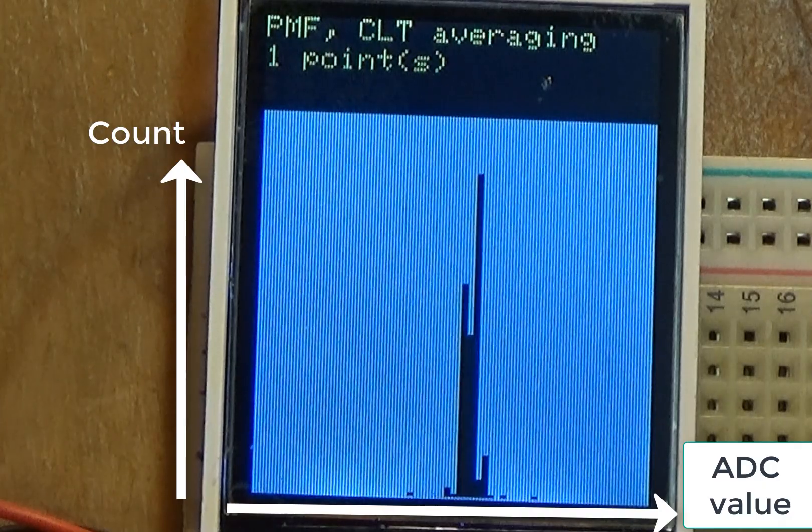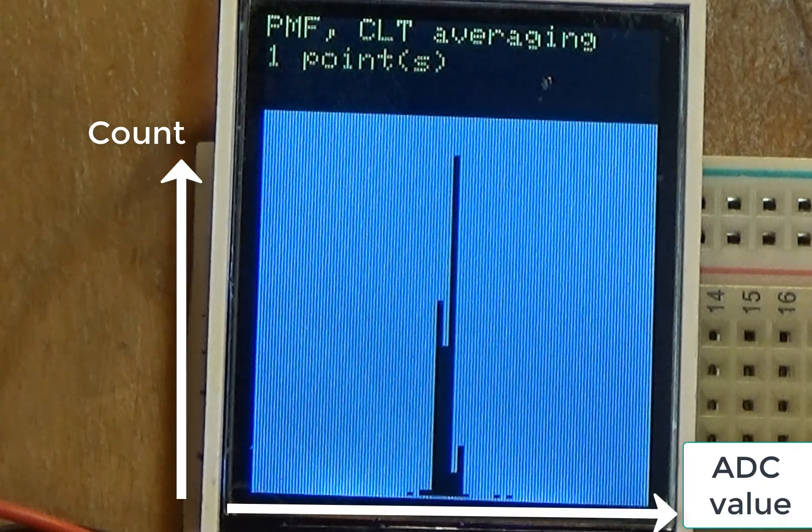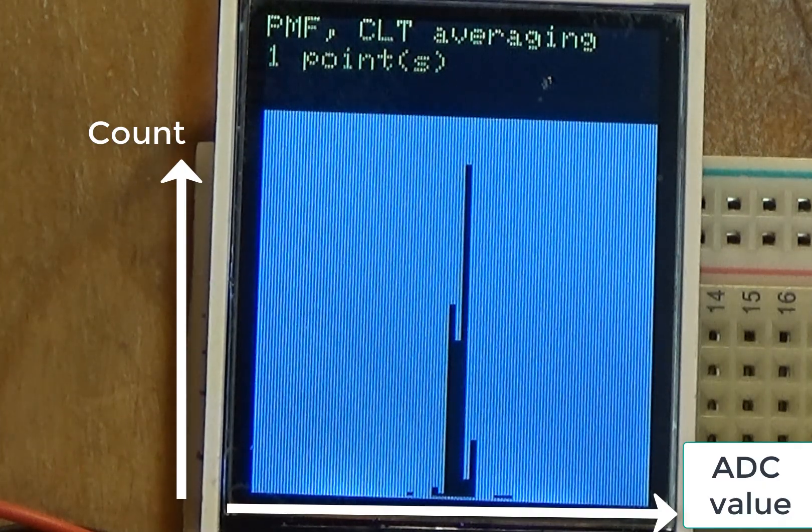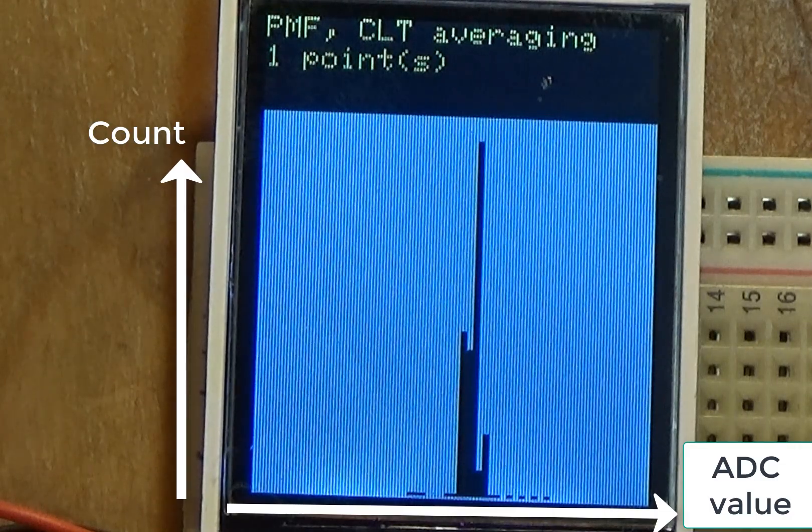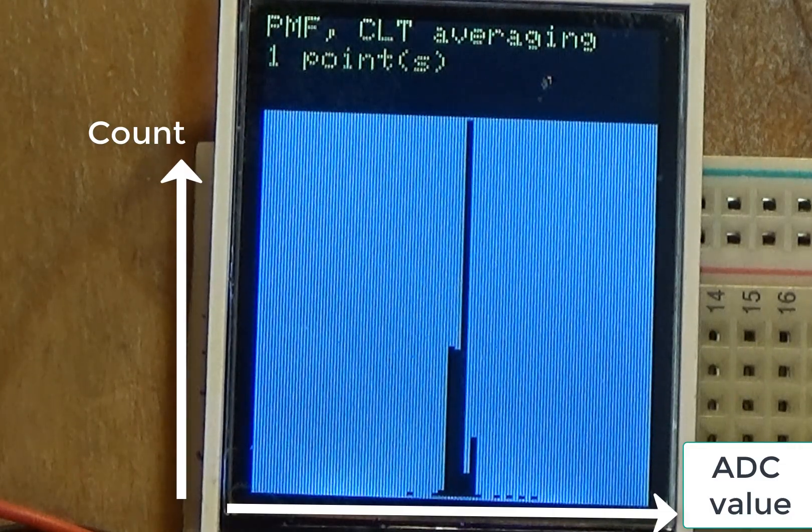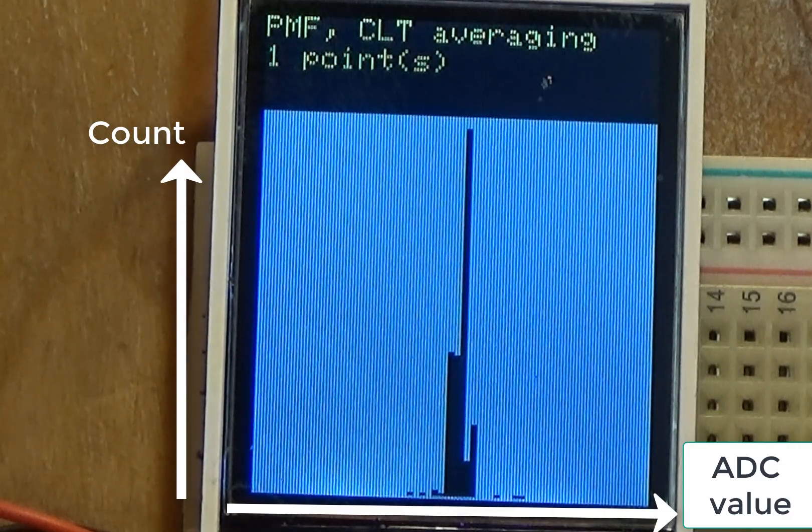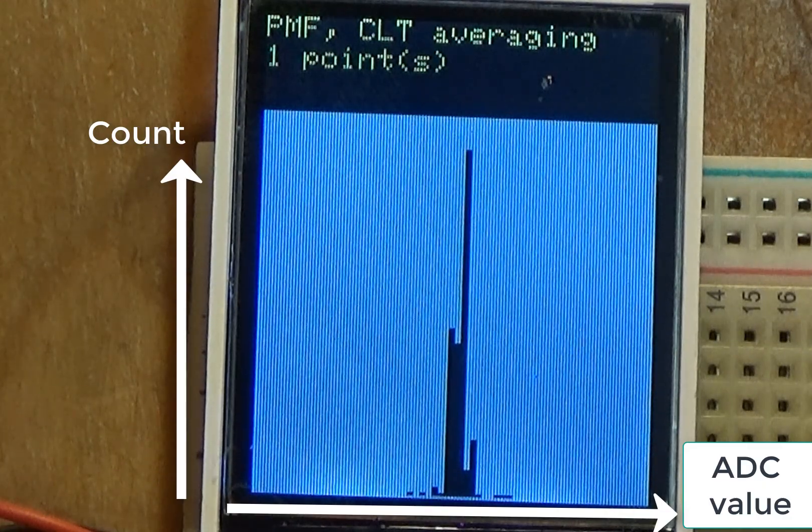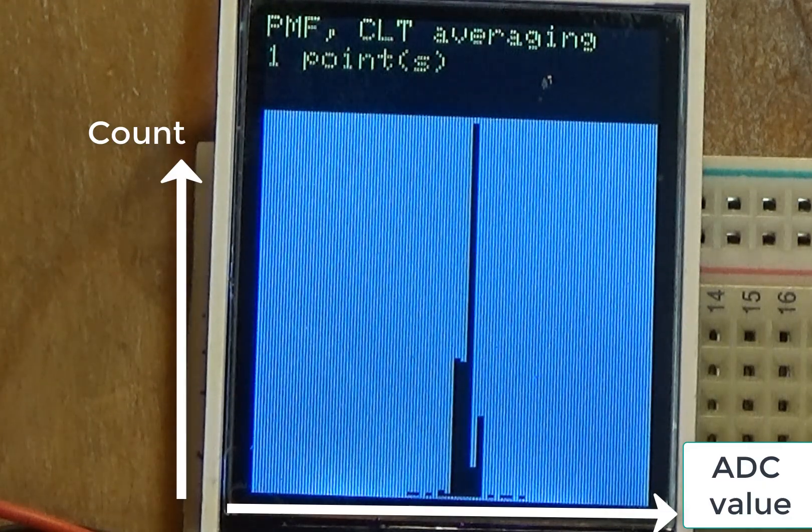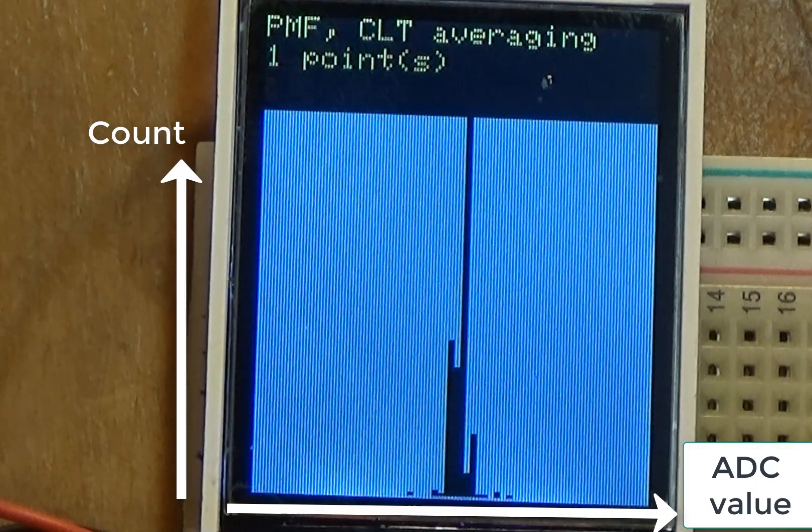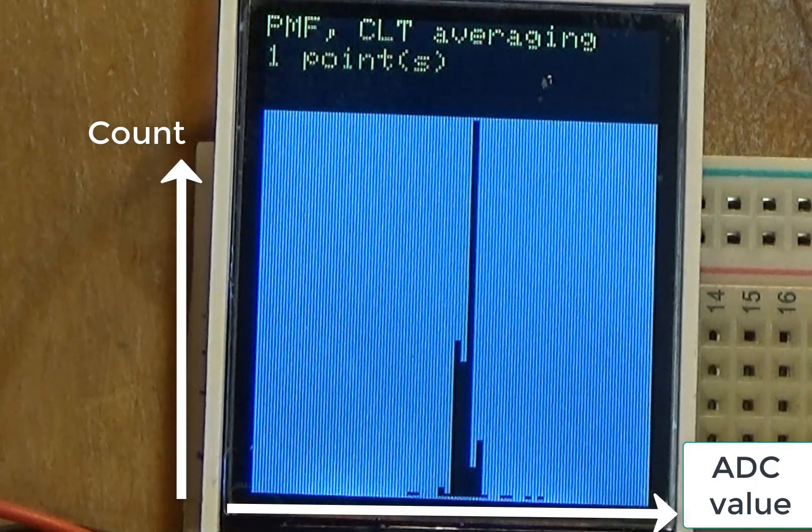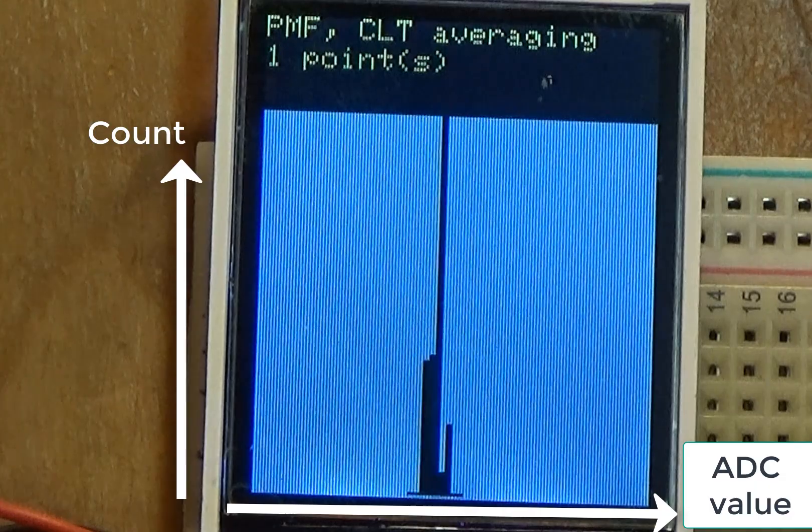So in summary, the central limit theorem tells us is if we average, then that the average of the data points will approach the average without the noise. And second, the more we average, the less spread, or the smaller the standard deviation, is in our data.